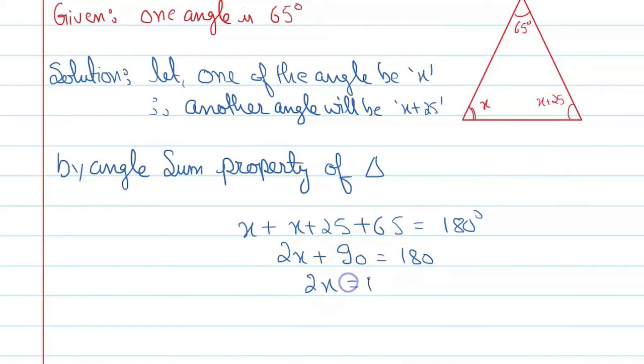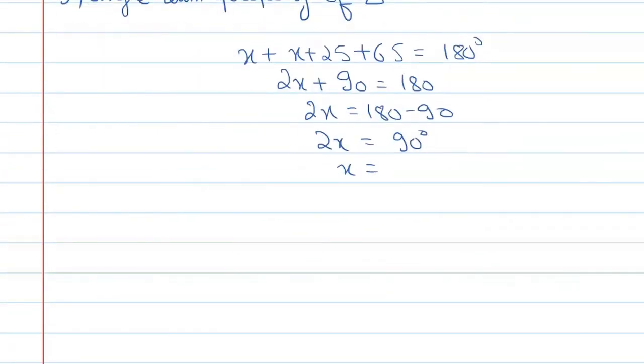Now, 2x equals 180 minus 90. So this will become 2x equals 90 degrees and x is equal to 90 divided by 2. So the value of x will become 90 divided by 2. This will become 45 degrees.